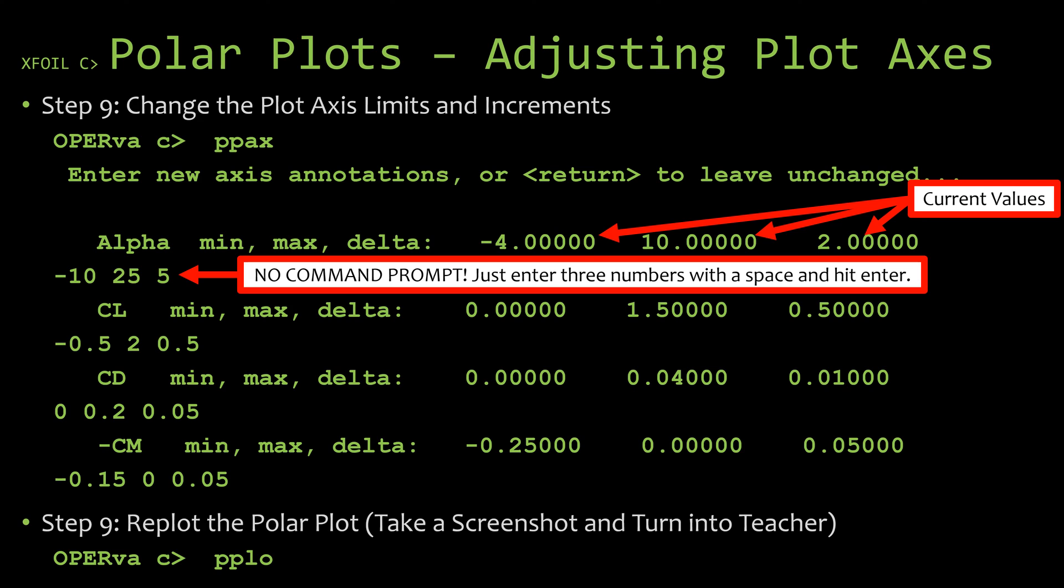After you've changed these axes parameters, you're going to need to re-plot the polar and you can do that with the pplo command, the polar plot command, and it will re-plot the polar with the new axes on it. Now don't feel bad if you need to run through changing the axis limits and then re-plotting, changing the axis limits, re-plotting. Don't feel bad if you've got to do it a few times until you get the plot to look good.